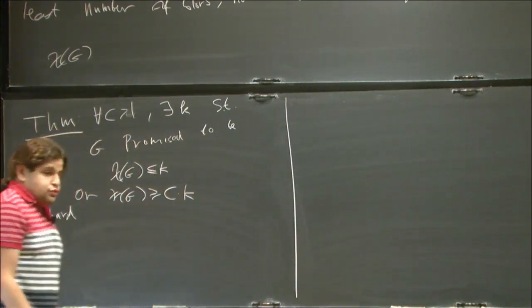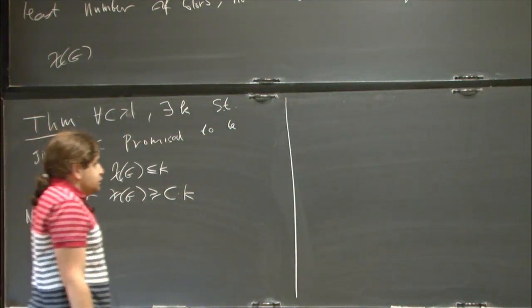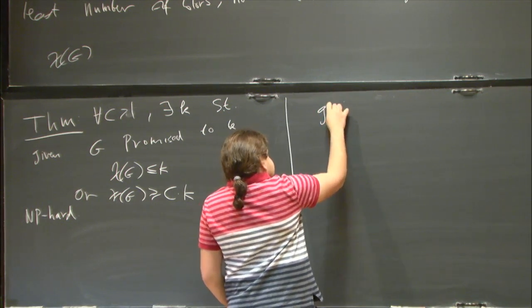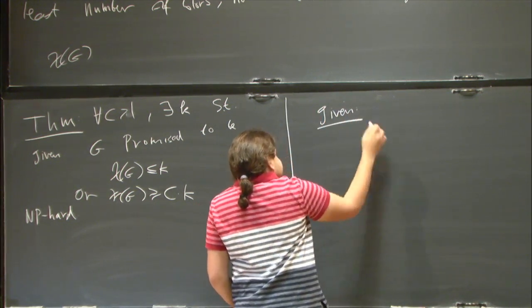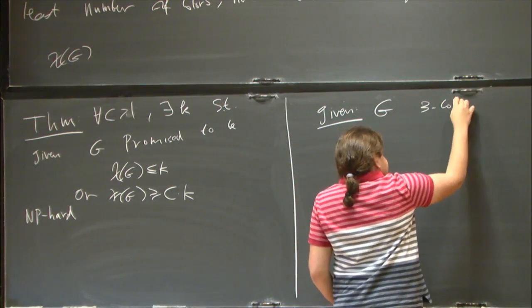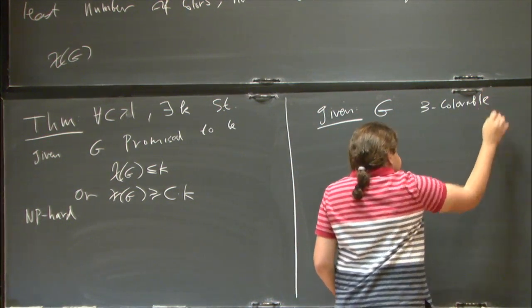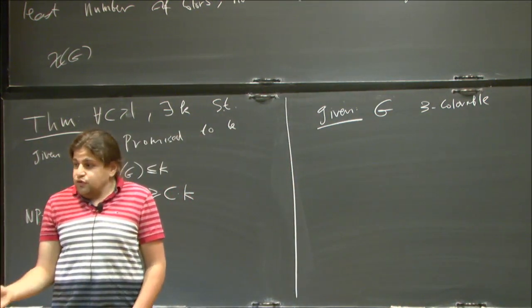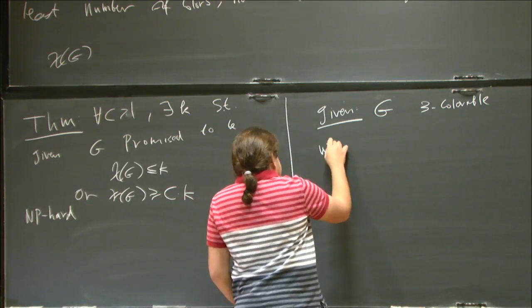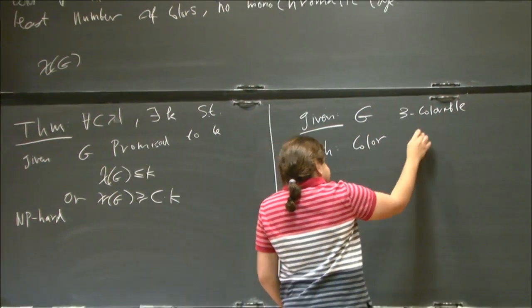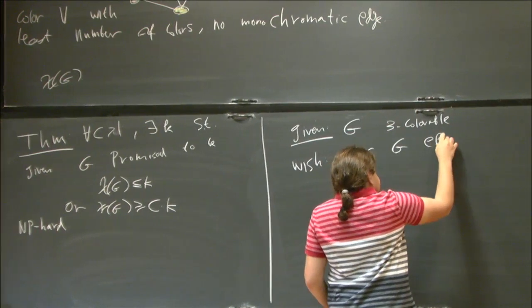So, this is a simple question, which we don't know how to answer. So, from now on, we'll assume that we have a graph that it's three-colorable. And what we want to do is color it with the least number of colors. Efficiently, of course.